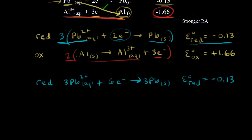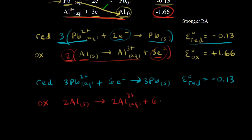For the oxidation half-reaction, we have 2Al(s) → 2Al³⁺ + 6e⁻. Again, we do not multiply the oxidation potential by 2 because voltage is an intensive property, so the standard oxidation potential remains +1.66 volts.